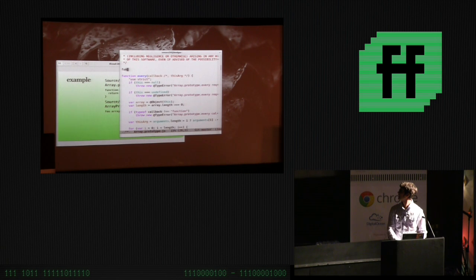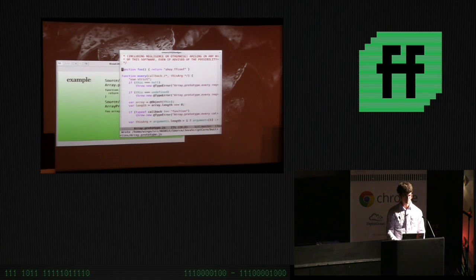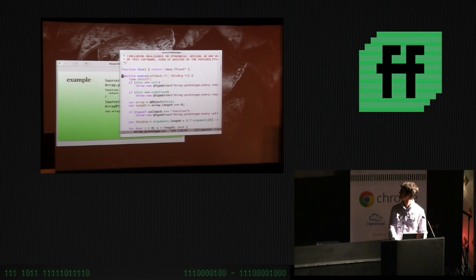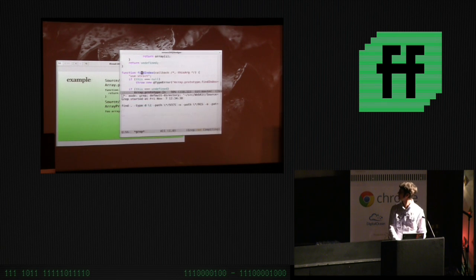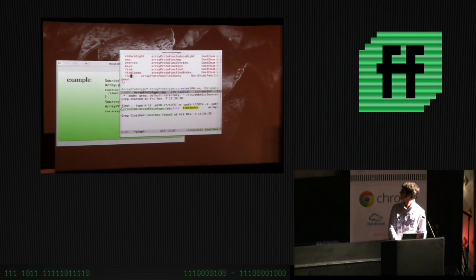Here is the implementation of every which is inside your browser. I want to do the most simple thing, which is to add a function: function foo, return 'ahoy ffconf'. So we have a function, it's in this file, it's going to be on array prototype. I have to modify one more thing though, unfortunately.